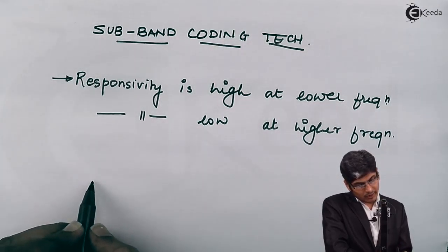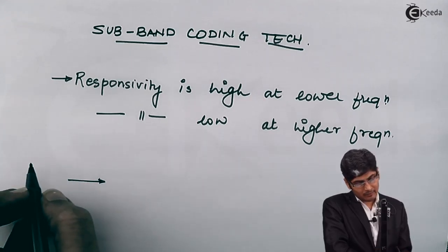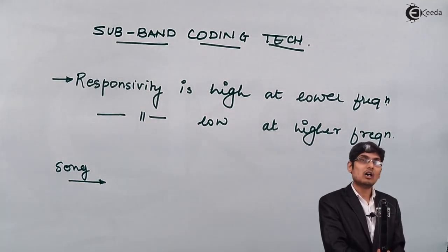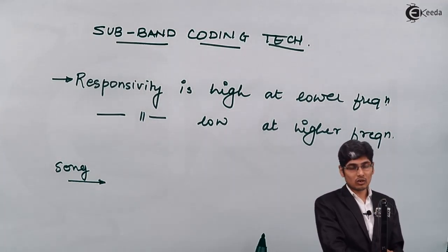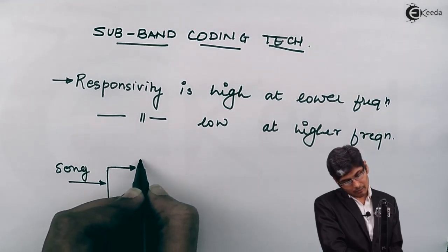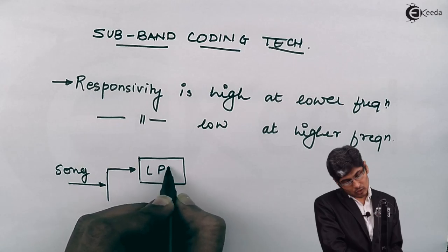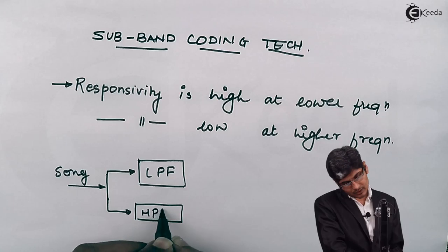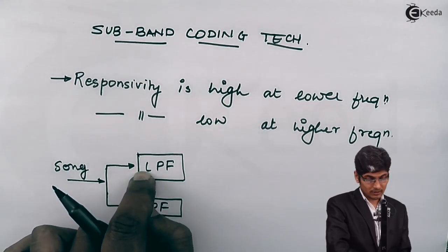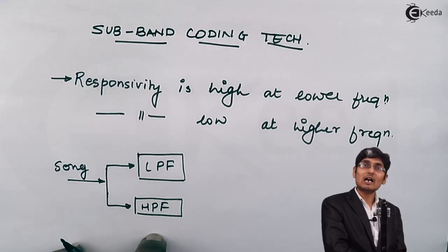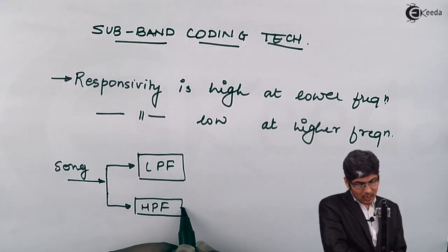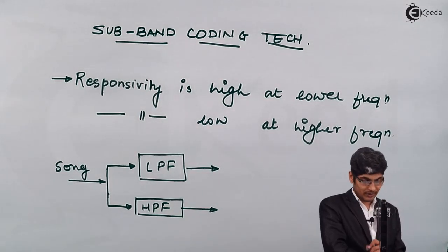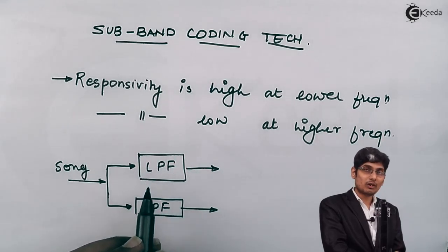Whenever the signal comes to the input — let's say a song is being processed — I will first pass it through a low-pass filter and a high-pass filter. The low-pass filter will pass the lower frequencies and the high-pass filter will pass the higher frequencies. In the high-frequency channel I will process the high frequency data, and in the low-frequency channel I will process the low frequency data. I know that the low frequency data is more important than the high frequency data.